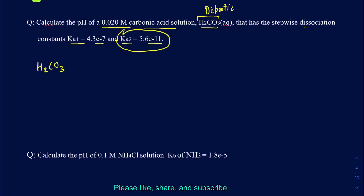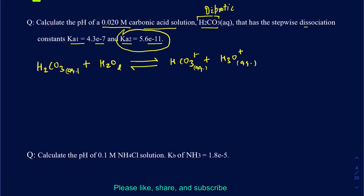So let me go ahead and write down the equation here. H₂CO₃ aqueous plus H₂O liquid is going to be in equilibrium with HCO₃⁻ plus H₃O⁺ aqueous. The bottom line is, if you can figure out what your H₃O⁺ concentration is, that's all you really need to figure out the pH, and that's exactly what we're going to try to do here.